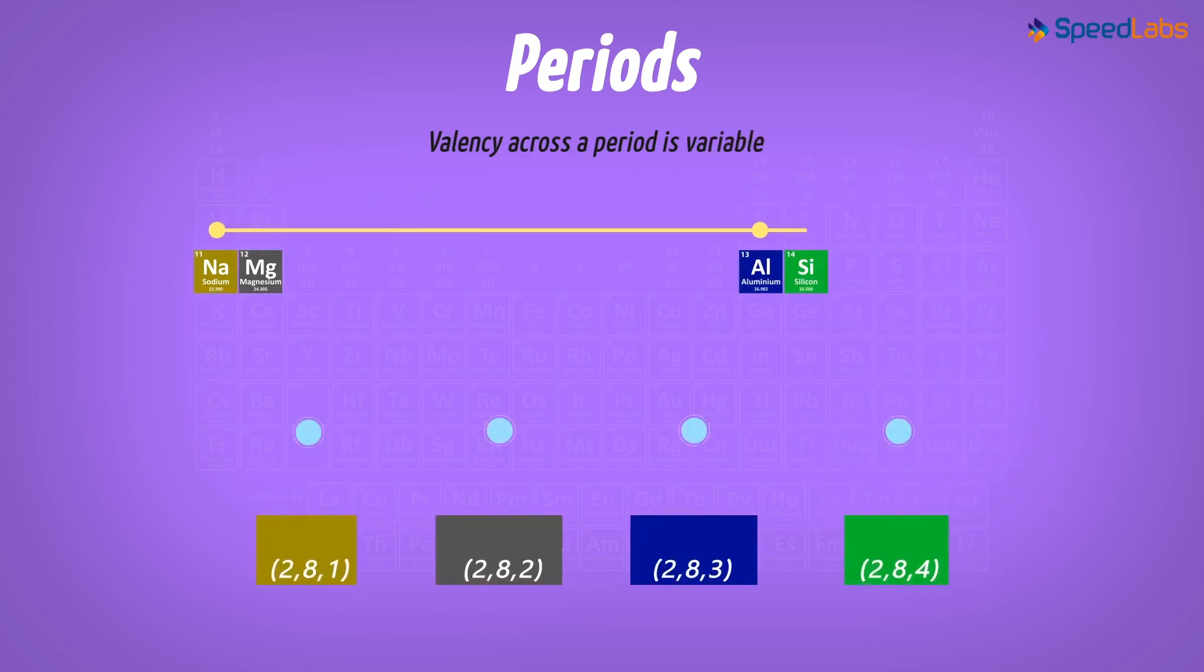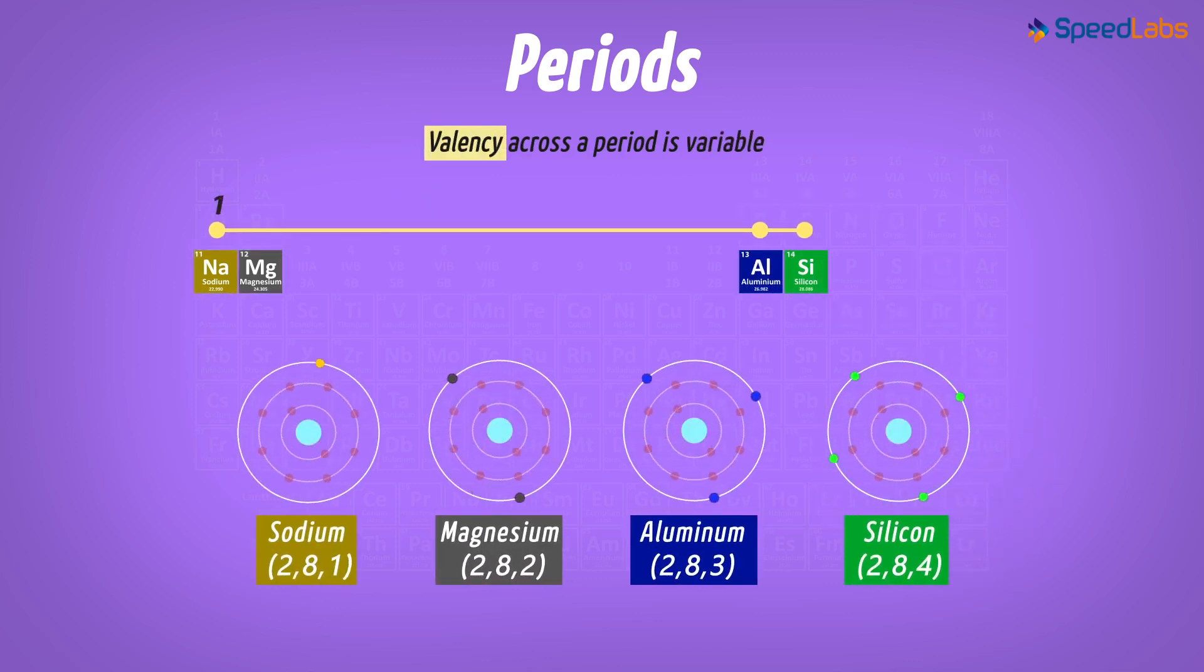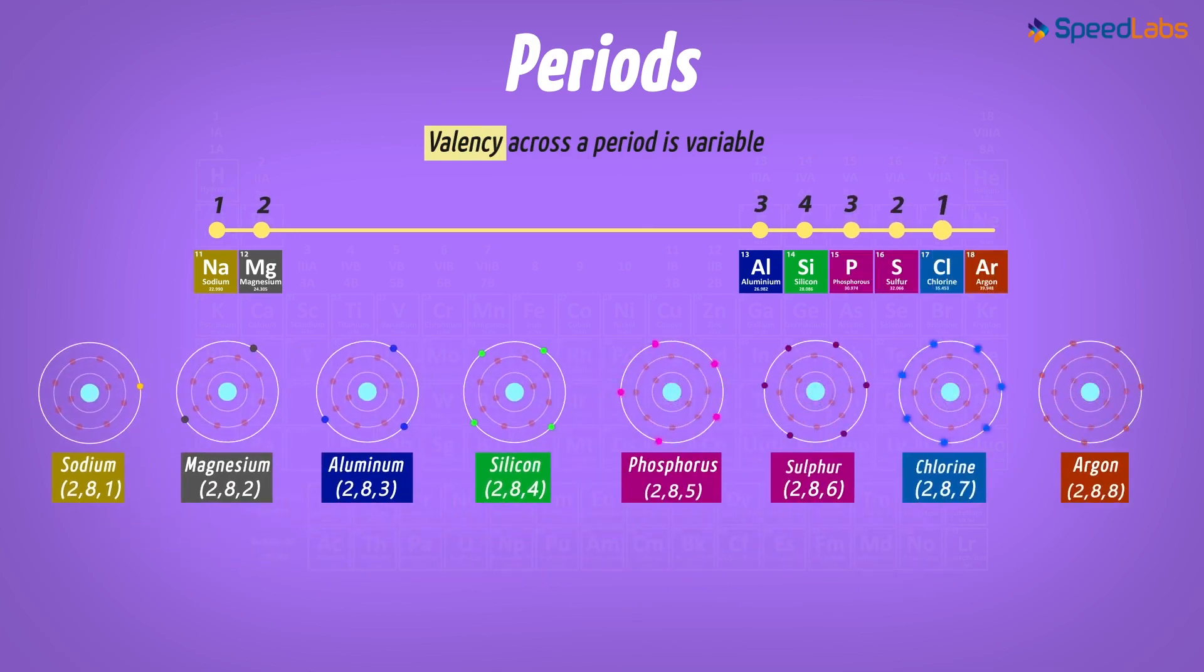From the left to this point, the valency will increase from 1 to 4. And from this point to the right, it will decrease from 4 to 0.